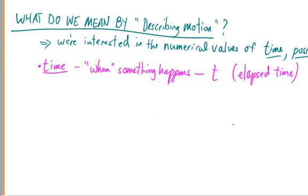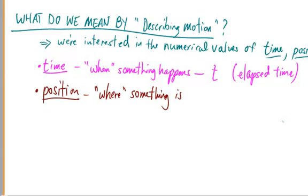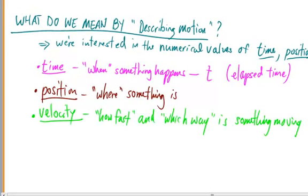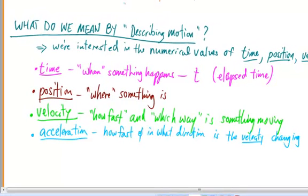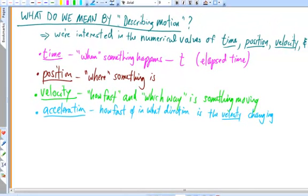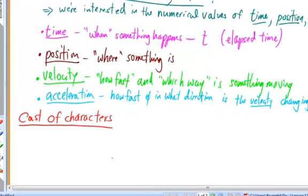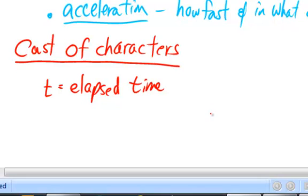The next variable is position, which means where something is. We're interested in velocity, which means how fast and which way is something moving. And finally, we're interested in acceleration, which means how fast the velocity is changing, and in which direction. So, let's introduce ourselves to this cast of characters who will strut and fret upon the stage, telling their tale about what's happening with the object. As we said before, we'll represent the elapsed time using the variable t. We make the assumption that at some moment, we're suddenly interested in how the object's moving. And we'll start our clock at that moment. That's t equals zero.